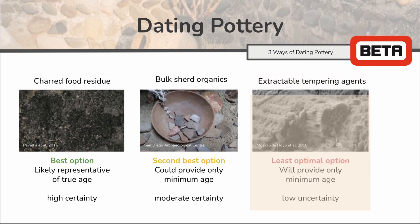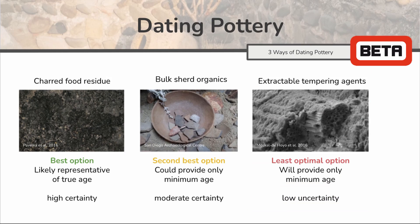Finally, the third option is to extract the date the tempering agents were used to solidify the pot, which is generally clay. The clay used to make the pottery may have plant pieces, as you can see from the image. Sometimes the clay and organic inclusions may have been laid down many years before it was used to make the pottery. As a result, you may only receive a minimum age again, but this is assumed to have less certainty than the other two methods.